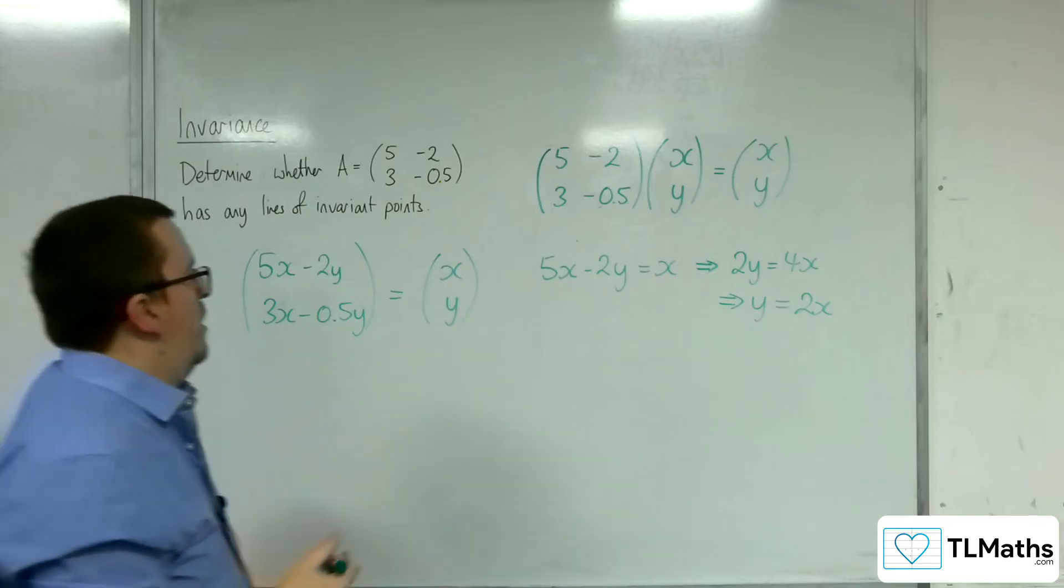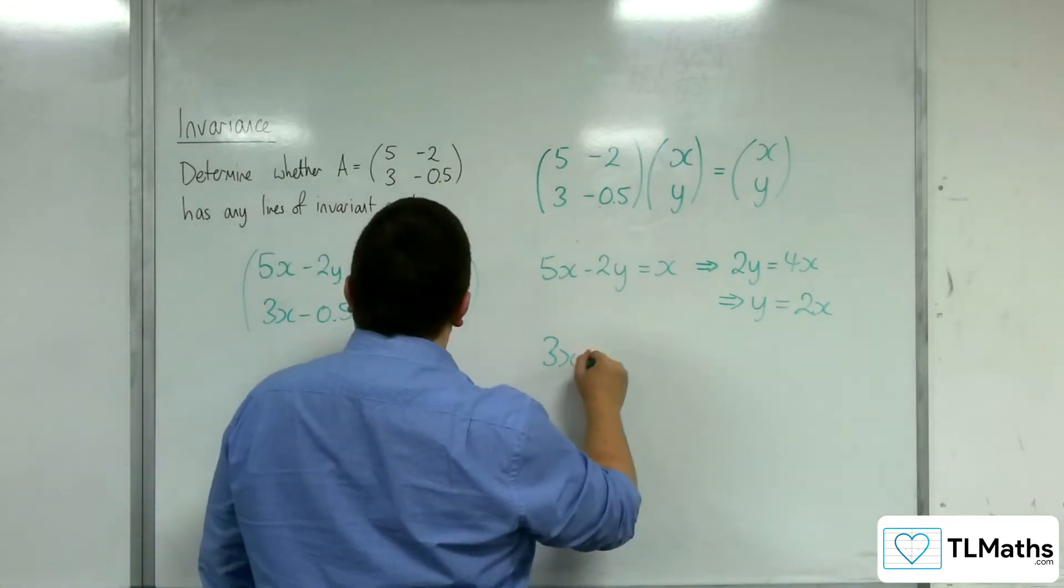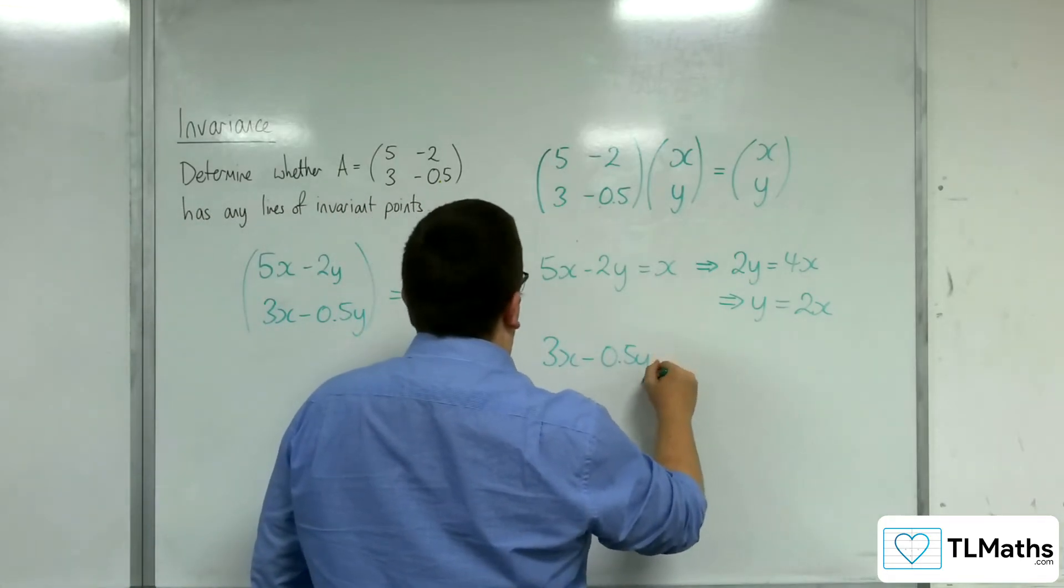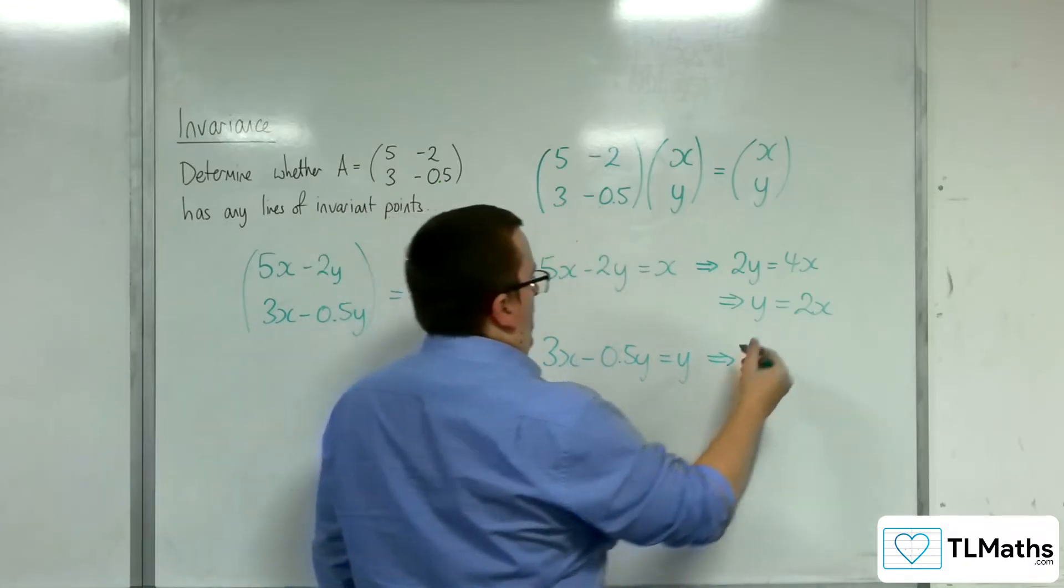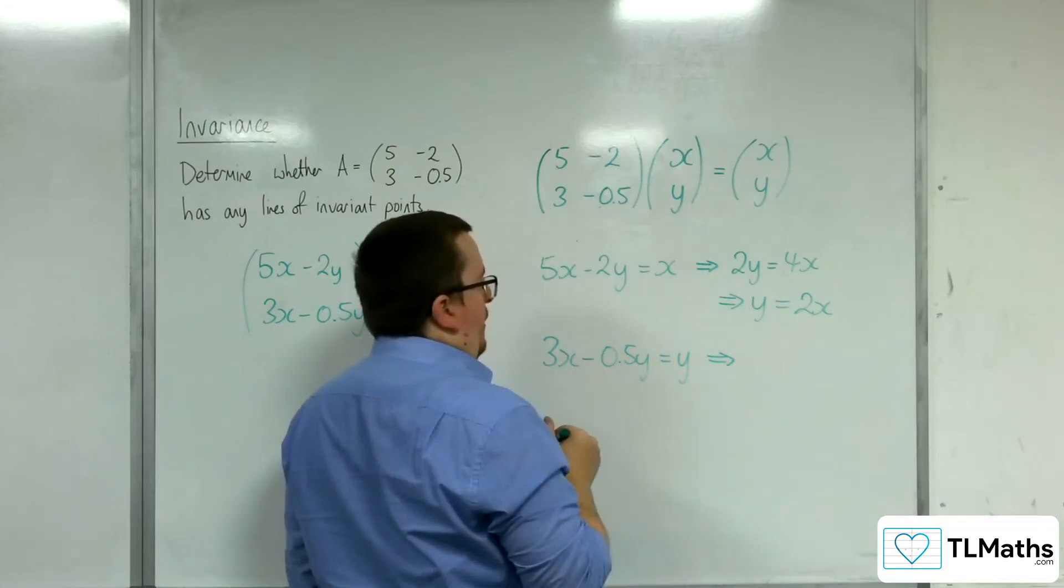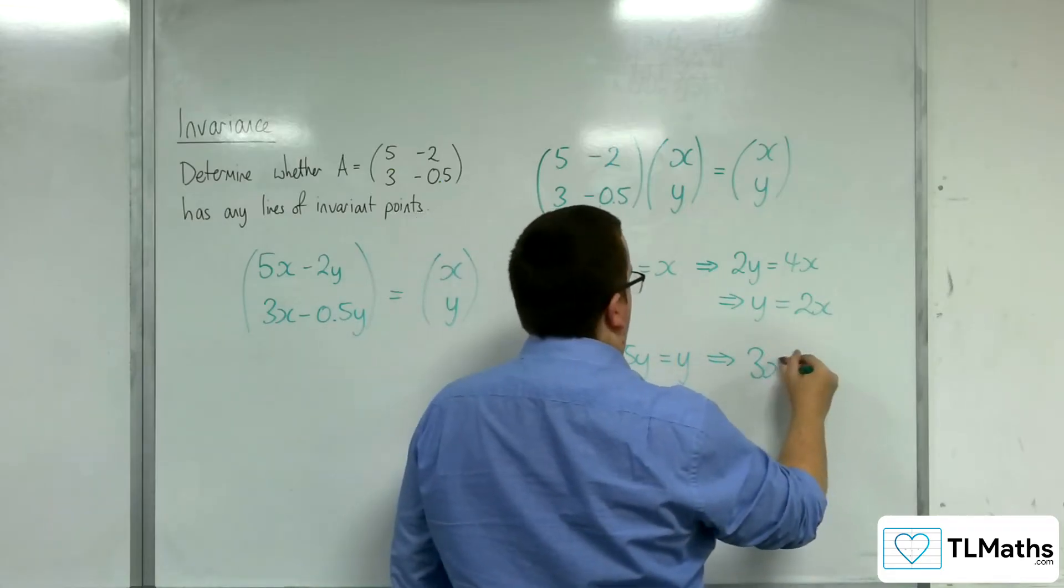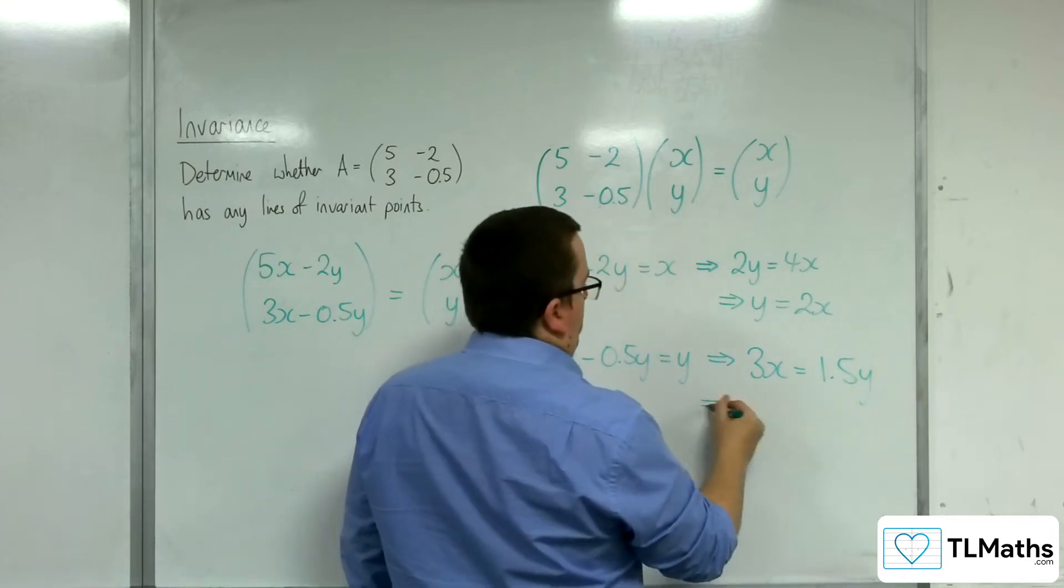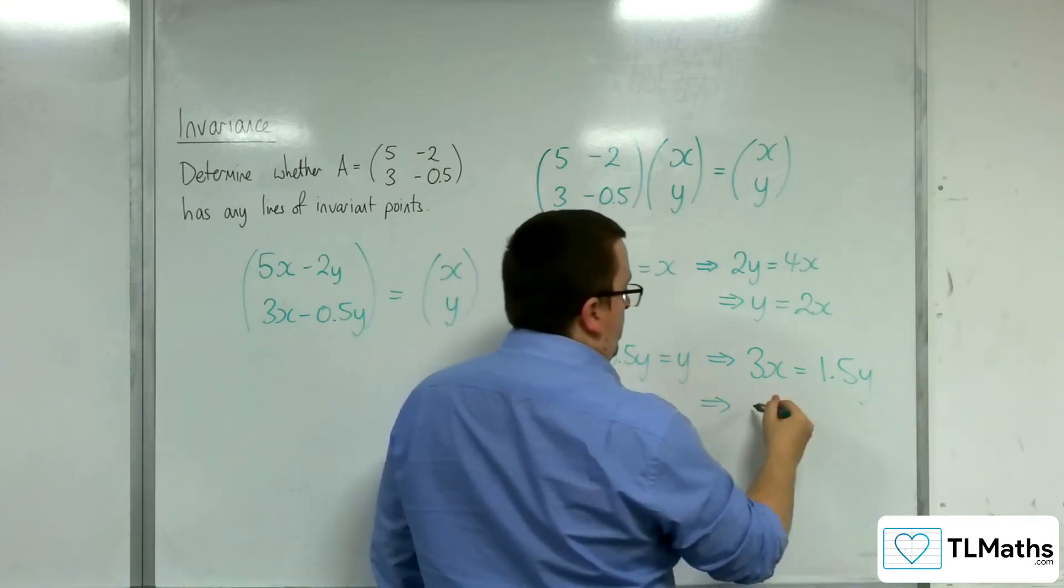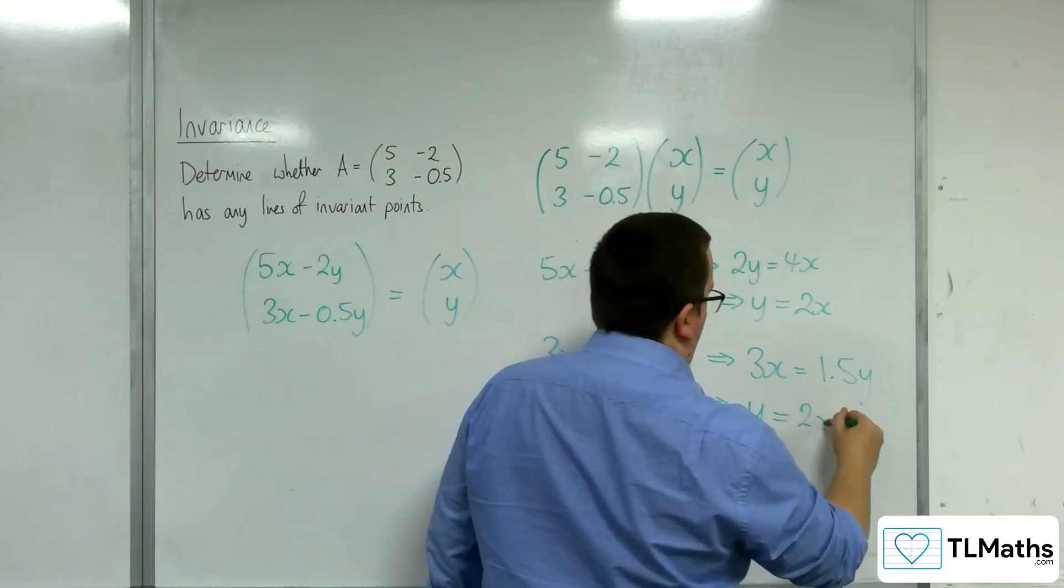The bottom row, I've got 3x take away 0.5y equals y. So adding 0.5y to both sides, we get 3x equals 1.5y. Dividing both sides by 1.5, I get y equals 2x.